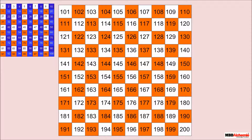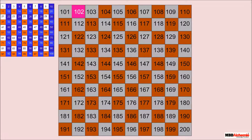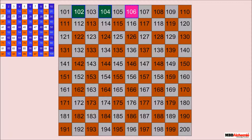Now let's learn forward counting in twos from 100 onwards. 2 more than 100 is 102. 2 more than 102 is 104. 2 more than 104 is 106. 2 more than 106 is 108. 2 more than 108 is 110.